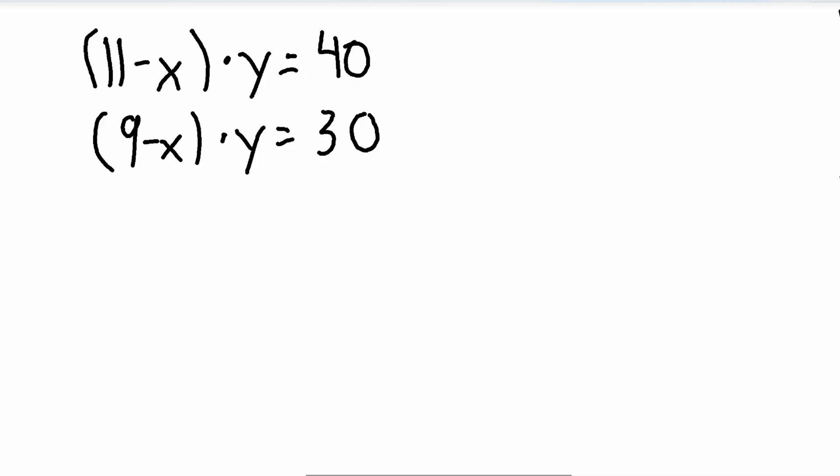We're going to try, let's change this equation to put into terms of y, so we have y equals something, and then we can plug that into this equation. So let's change this equation to get y by itself. In order to do that, divide by 11 minus x. Then that's going to leave you with y is equal to 40 over 11 minus x.